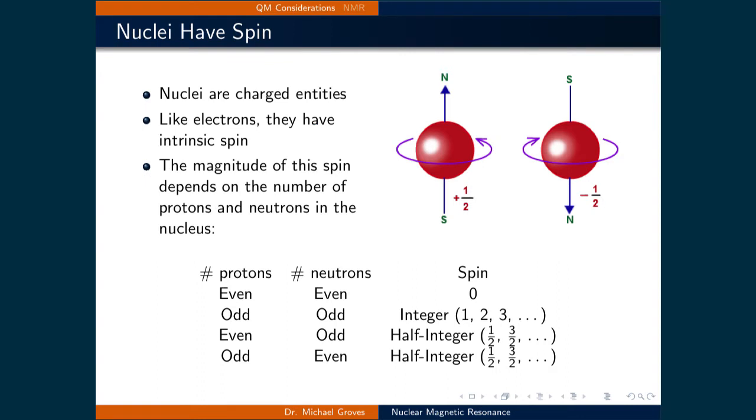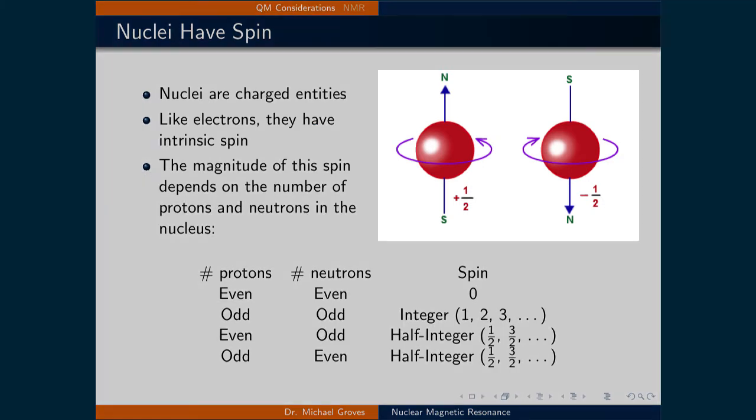Like electrons, nuclei have intrinsic spin. A poor representation of this intrinsic spin is to imagine that the nuclei are spinning about an internal axis, like a top, as illustrated in the figure on the right.